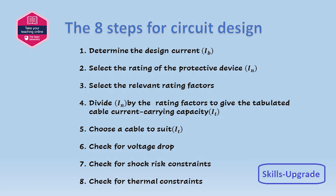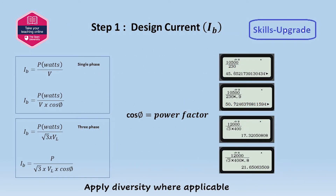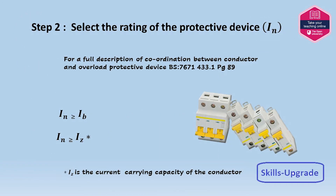The last three steps are to check all the factors: voltage drop, shock risk, and thermal constraints. First of all, design current has to be established. Shown are all the formulas for single and three-phase calculations, including with and without power factor. Power factor is shown as cosine — for example, cosine 0.9 is a power factor of 0.9.